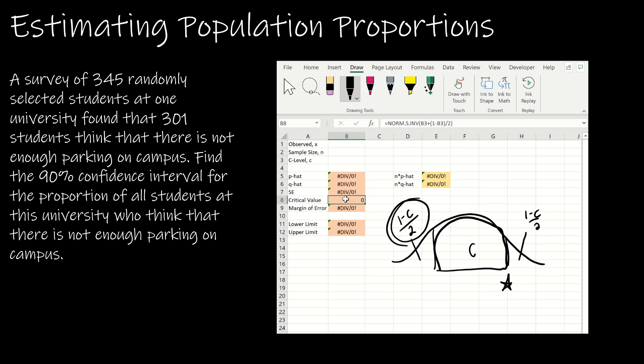We have the margin of error which is simply the standard error times the critical value to get the margin of error. Then just as before, lower limit and upper limit by taking the P hat as the center and then minus the margin of error and plus the margin of error.